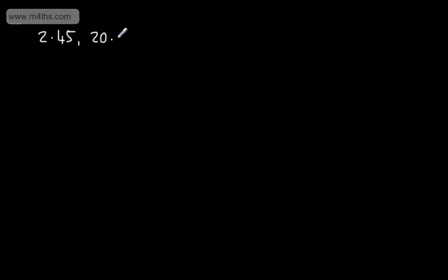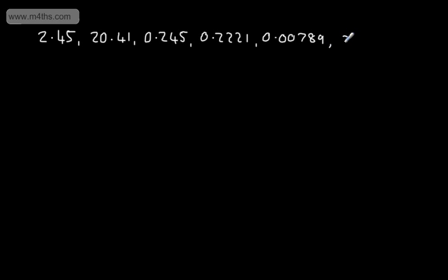We might be asked to order a range of different decimals. So let's say we've got 2.45, 20.41, 0.245, 0.2221, 0.00789, and then we have 2.014. What we're going to do is look at ordering these in ascending order, so from smallest to largest. One easy way to do it is to put decimal places down the page and